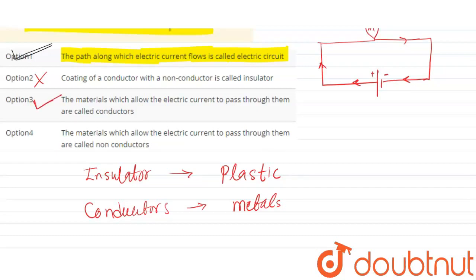So this conductor statement is correct, and the third option is correct. Electricity can easily pass through conductors. Next statement: the materials which allow electric current to pass through them are called non-conductors.